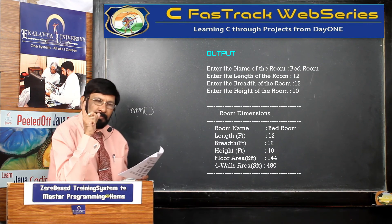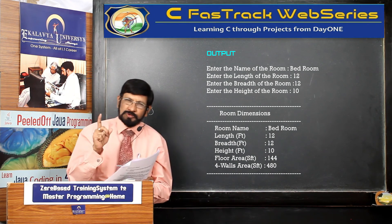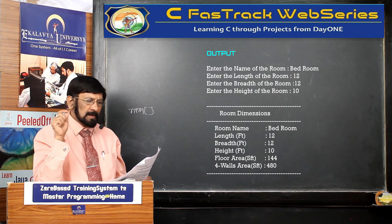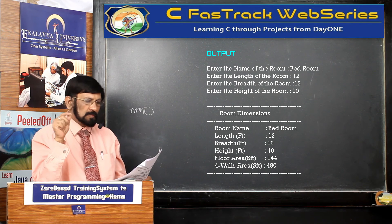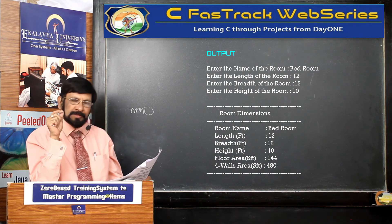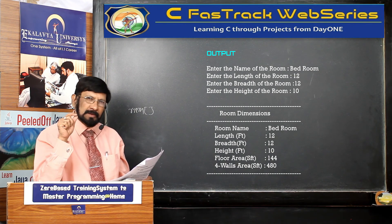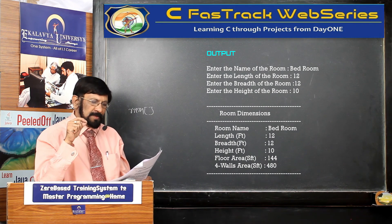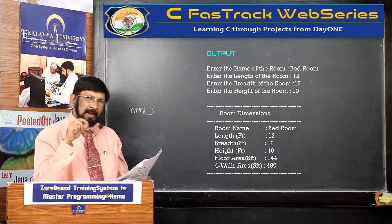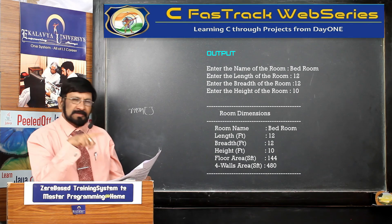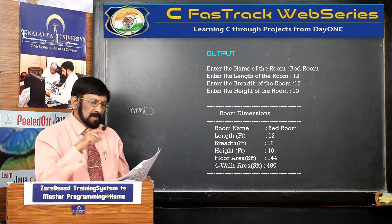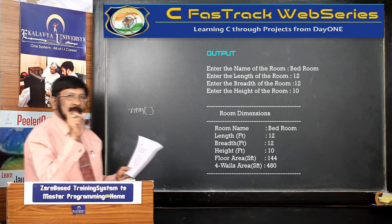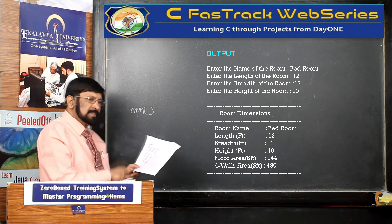Here, units — the professional approach. In colleges you may not care for that, but here you write units. Suppose length is 12 feet, breadth in feet, height also in feet. Area — you confirm with SFP, square feet. Wall area also in square feet. Now your output should be presented in this manner.